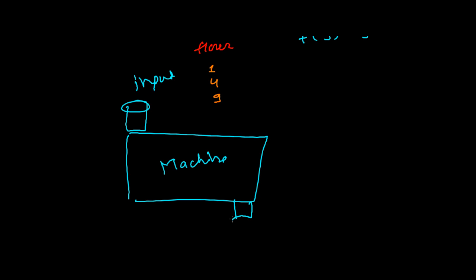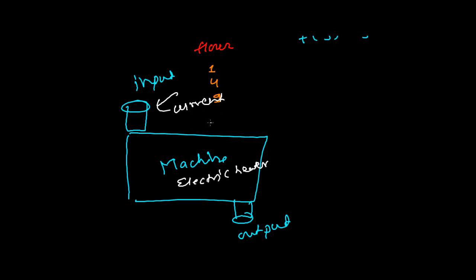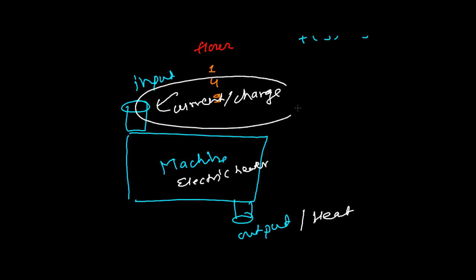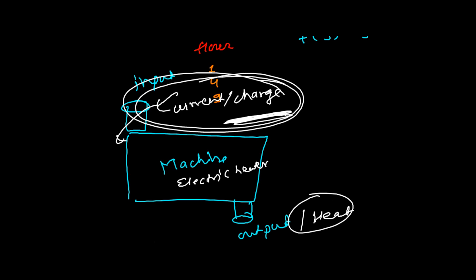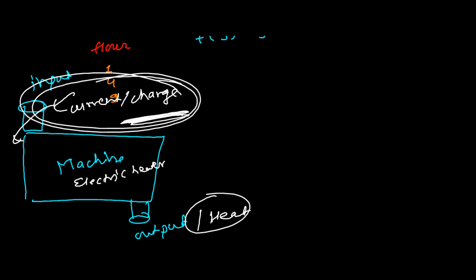Think of an electric heater: if you provide some current or electricity to the heater, you get heat as output. Putting in some input and getting some output — that's a function. For every raw material put into the machine, there will be a unique product, and for every raw material there will always be some output.